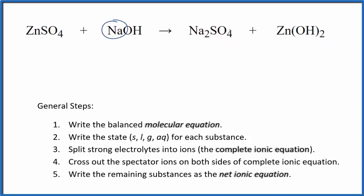It looks like I have a sodium here and then two sodiums here in the products. Let's put a two as our coefficient. That balances the sodiums. Now I have two hydroxides, but I have two hydroxides over here, so that's good. I have a zinc on both sides and then I have a sulfate on both sides. So this is the balanced molecular equation.